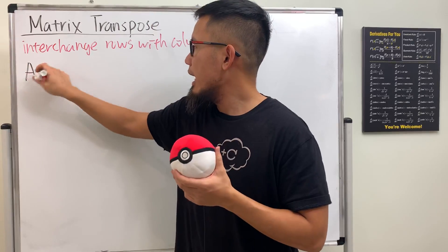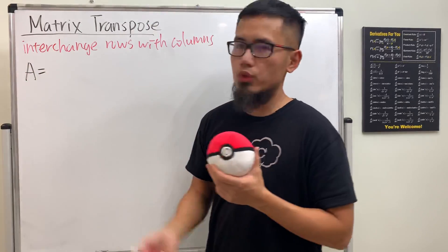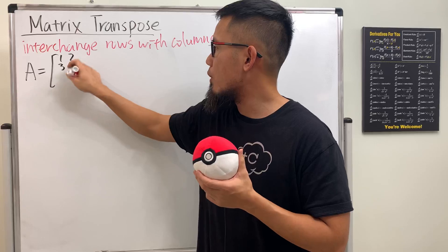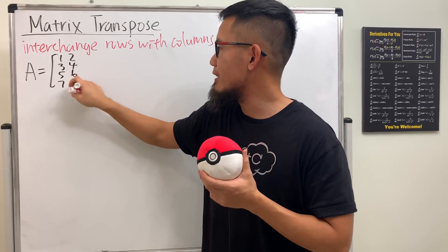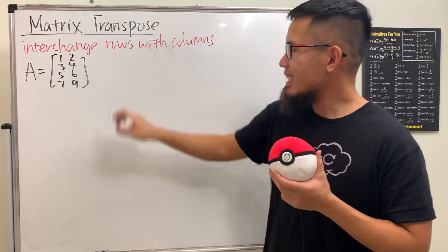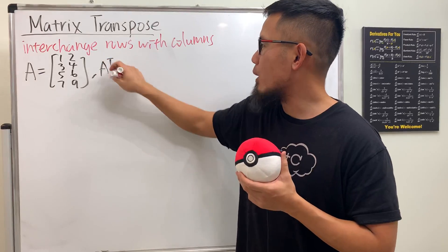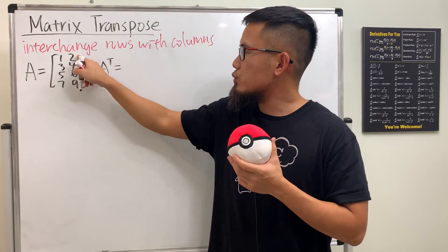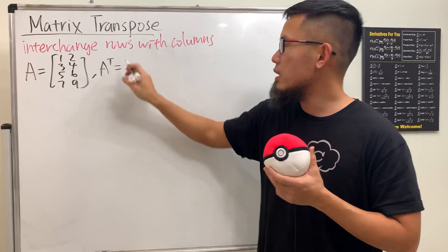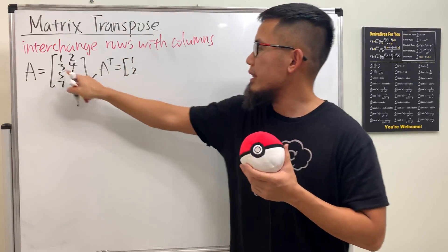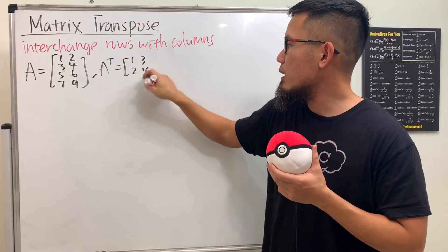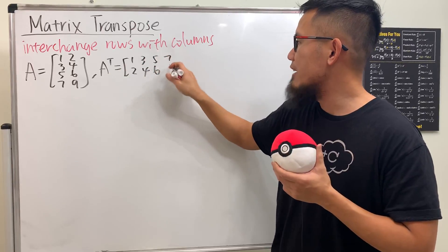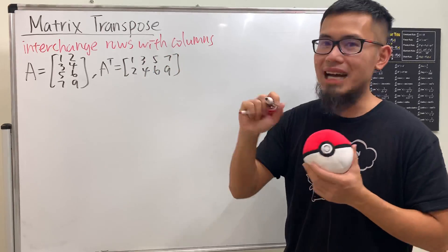Let me give you an example. Let's say A is equal to a 2 by 4 matrix: 1, 2, 3, 4, 5, 6, 7, 9. In that case, our A transpose is going to be the following — we take this row and put it as a column: so we have 1, 2, then 3, 4, then 5, 6, then 7, 9. Just like that.